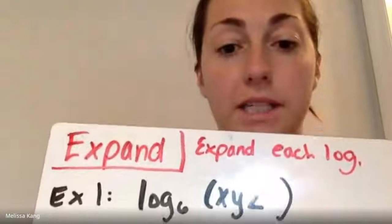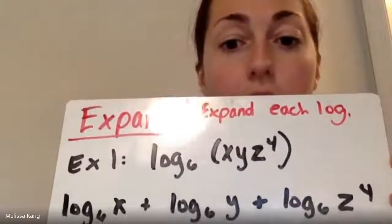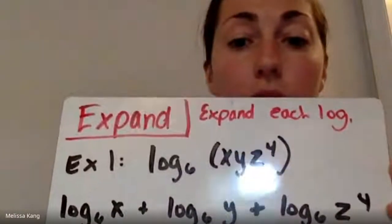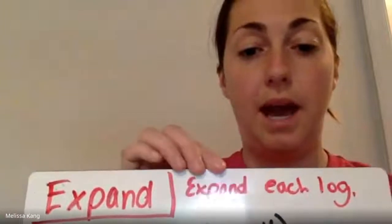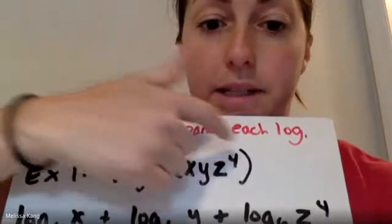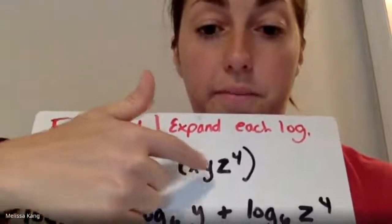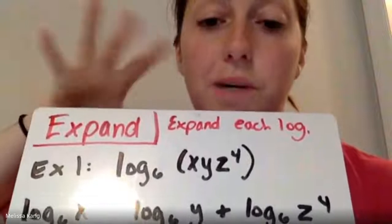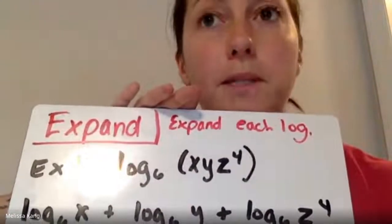All right, so as we said, we are expanding. Here's our example that I just wrote. Because we have nothing on the outside, it's all in the parentheses, I want to look at what operation I have. I have multiplication.